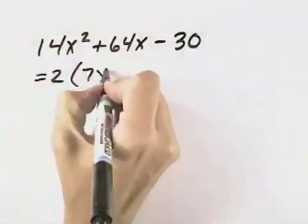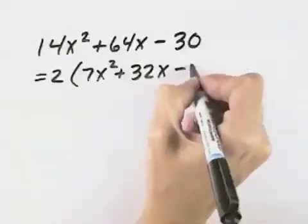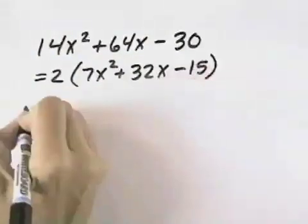When we divide that out of the first term, we're left with 7x squared. In the second term, we'll be left with 32x, and in the last term, we'll be left with minus 15.